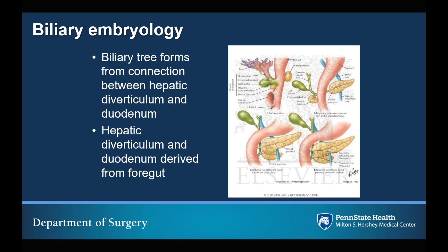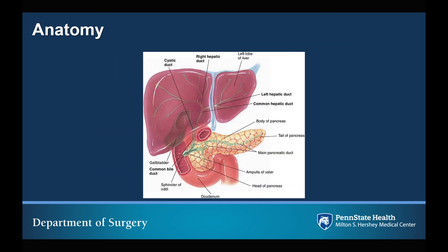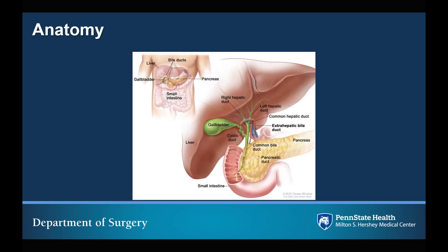In regards to biliary embryology, the biliary tree forms from a connection between the hepatic diverticulum and the duodenum. Both of these structures are derived from the foregut. The gallbladder is on the inferior surface of the liver, and a portion of the gallbladder is enveloped by the liver. The gallbladder is divided into the neck, infundibulum, body, and fundus, and drains into the cystic duct, which meets the common hepatic duct to form the common bile duct. The common bile duct continues until it meets the pancreatic duct at the ampulla of Vater.